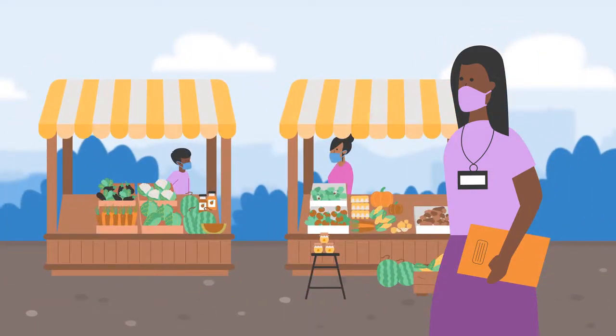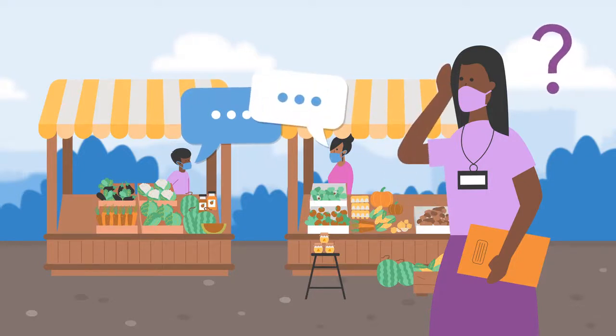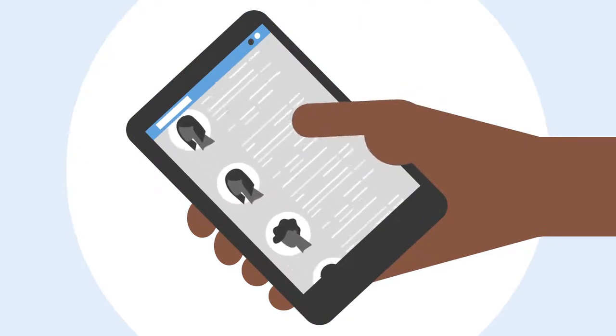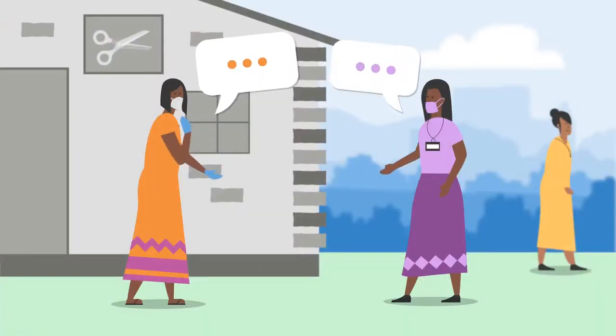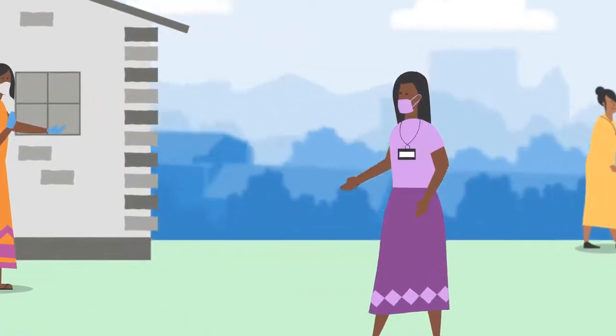She finds this information in different places. She may hear a rumor in the market, see something written on social media, or be told something by her hairdresser.